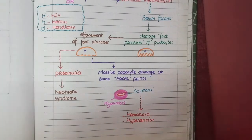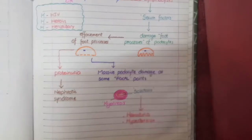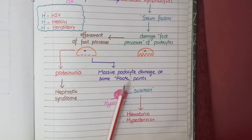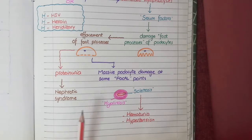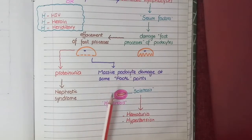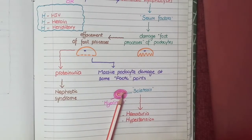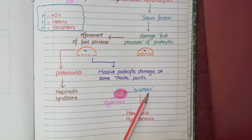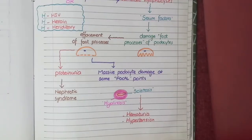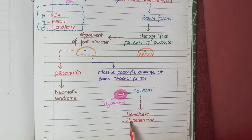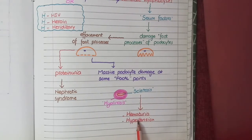Up to this point the pathogenesis is similar to minimal change disease. But in FSGS, at some foci the podocytes are so severely damaged that there is massive protein leakage. These leaked proteins deposit as hyaline material around glomerular vessels. Additionally, there is reactive proliferation of mesangial matrix in these areas. This hyaline material and mesangial matrix compress the glomerular capillaries, causing narrowing — called glomerulosclerosis. In some cases this can result in hypertension or hematuria, which does not occur at all in minimal change disease — a key difference.